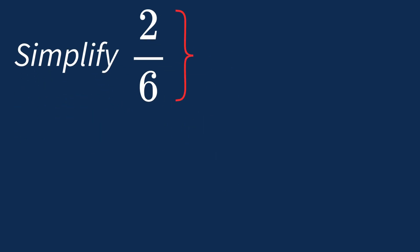To simplify the fraction 2 over 6, we start by looking for common factors between the top number, the numerator, and the bottom number, the denominator.